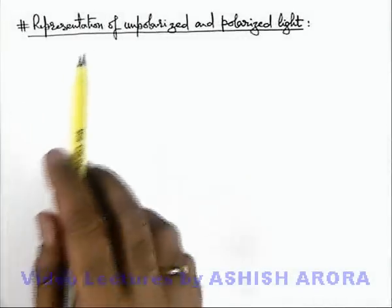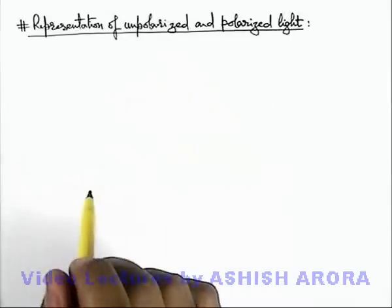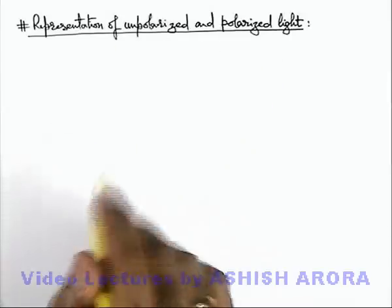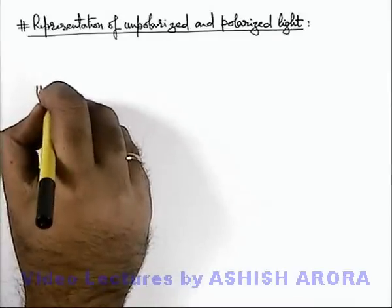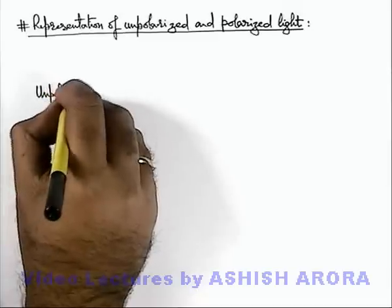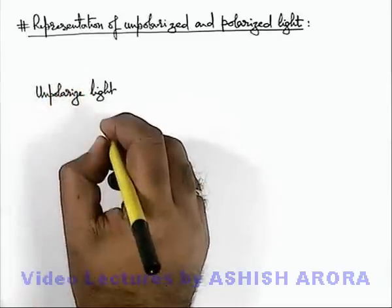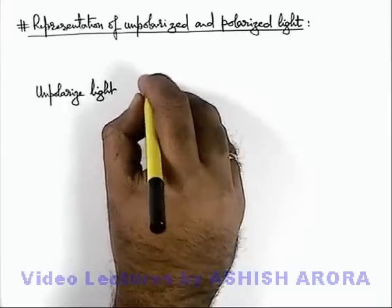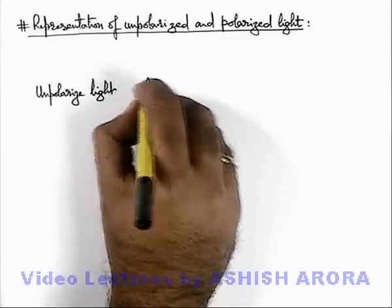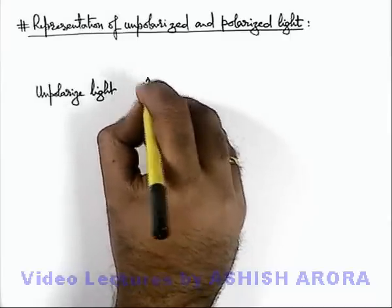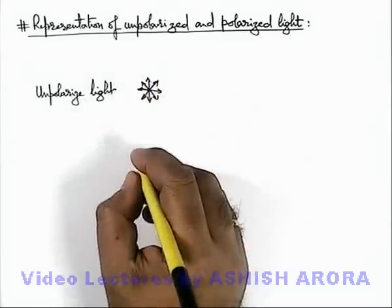Let us discuss the representation of unpolarized and polarized light on paper. We already discussed in the previous section that unpolarized light, or ordinary light, is the one in which the electric field vector oscillates in all directions perpendicular to the direction of propagation.